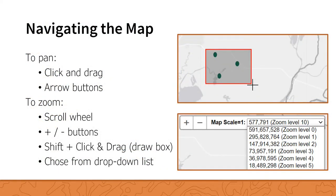When the map first opens, it is set to a statewide level zoom. There are several methods for navigating within the map. Click and drag or use the arrow buttons on your keyboard to pan and recenter the map. You can zoom in and out using the scroll wheel on your mouse, the plus or minus buttons on your keyboard or within the map, or hold down Shift and click-drag to draw a box for the area you want to zoom into. You can also choose a zoom level from the preset options in the drop-down list within the map.